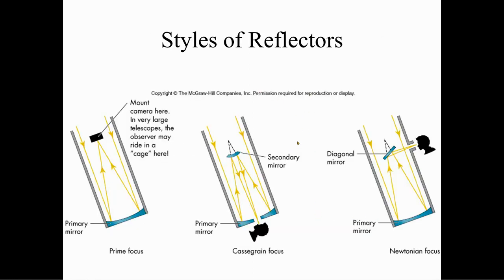There are different styles of reflectors. First, the prime focus — light comes in and there's usually a camera here; a lot of times the observer is inside the telescope riding in a cage. Cassegrain focus is when there is a second mirror that reflects it to your eyes — you still look through the end of the tube. And then the Newtonian focus, where there's an angled mirror inside that redirects the light outside of the telescope for viewing.